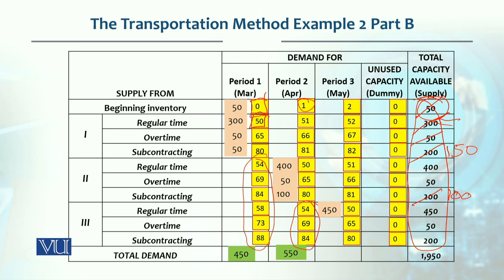For the third period, 450 units of regular production capacity were available — we met the demand and fully utilized it. Overtime was also fully utilized. Since the requirement is 750 units, on the basis of $65 overtime we fully utilized that capacity. Then the next lowest option is subcontracting in the third period — all 200 units used — giving a running total of 700 units.